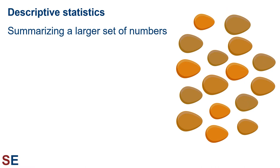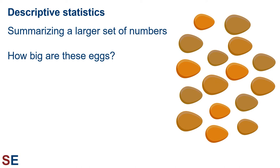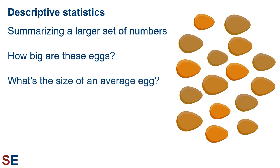With descriptive statistics, we're using special numbers — descriptive or summary statistics — to represent a larger set of numbers. For example, imagine that we have a bunch of eggs and we want to know how big they are, that is, how much do they weigh? We could measure all the eggs, but then we have a bunch of different numbers and it's hard to really understand what's going on with so many numbers. Instead of keeping track of all the individual weights, we could calculate the average weight of the eggs. We can then describe the sizes of our eggs by talking about their average weight.